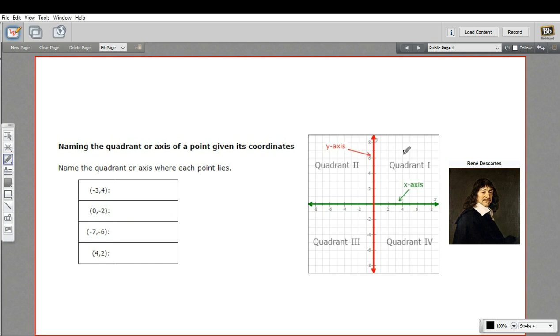In this first quadrant, both are positive. So if we had an x that's positive and the y that's positive, we know it's going to be in quadrant one. In quadrant two, the x is negative and the y is positive.